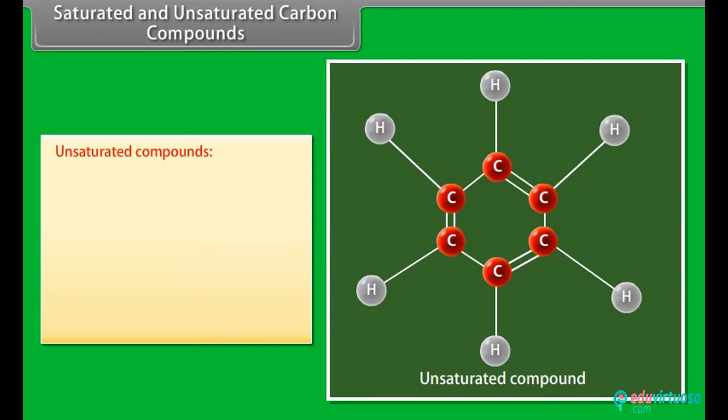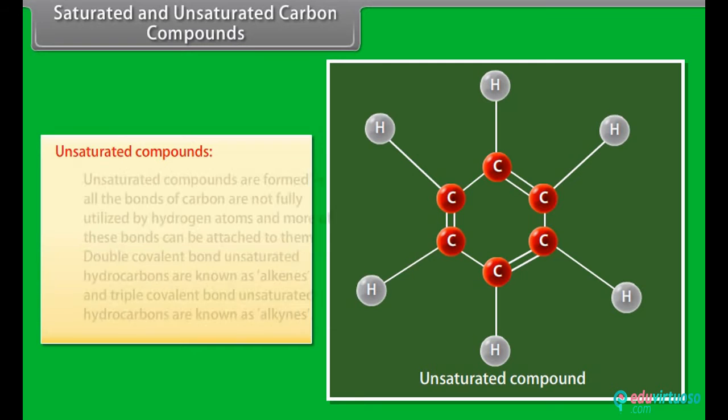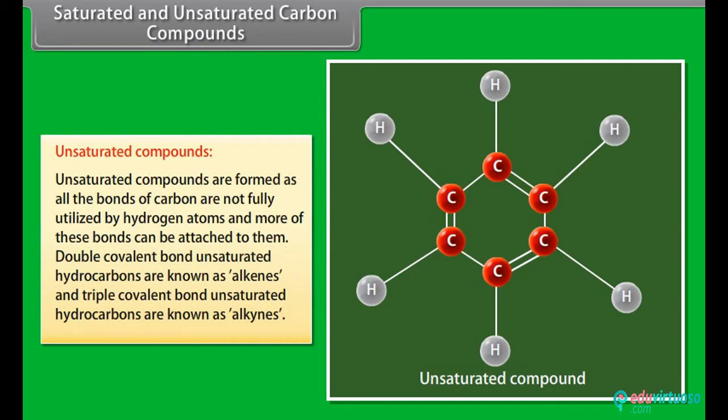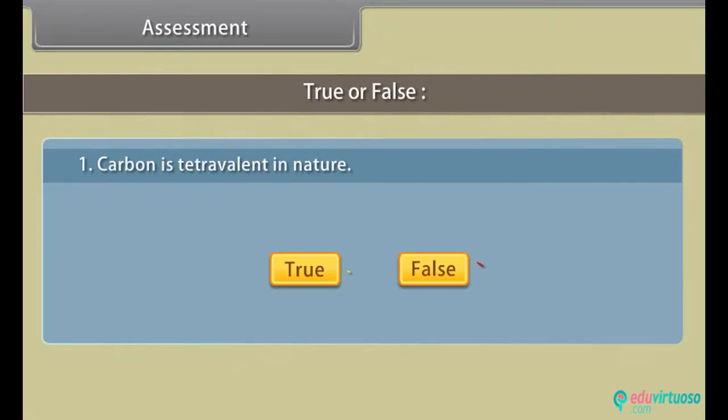Unsaturated compounds. Compounds of carbon and hydrogen that contain double or triple covalent bonds between the carbon atoms are called unsaturated hydrocarbons. These are formed as all the bonds of carbon are not fully utilized by hydrogen atoms and more of these bonds can be attached to them. Double covalent bond unsaturated hydrocarbons are known as alkenes and triple covalent bond unsaturated hydrocarbons are known as alkynes.